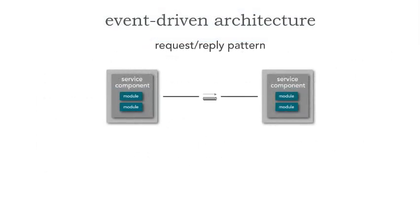Within event-driven architecture, we know that we can leverage messaging to apply to really any kind of architecture style. This gives us composability when we look at different architectural patterns and styles. The request-reply messaging pattern is very powerful, but it is an asynchronous protocol, so the question always becomes: how do I get a response in an asynchronous protocol?